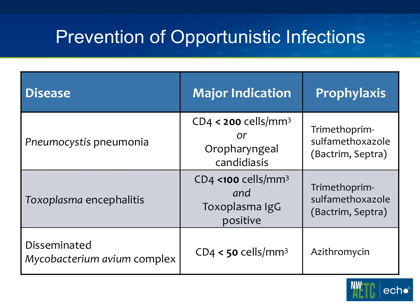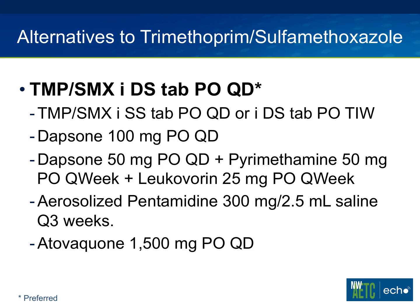Taking three common pathogens: for pneumocystis pneumonia, we provide prophylaxis when T cells are less than 200 or when there is oropharyngeal candida indicating immune compromise. Preferred therapy is trimethoprim-sulfa, a double-strength tablet once a day. For toxoencephalitis, we're preventing disease, not infection — for individuals with T cells less than 100 who are IgG-positive for toxo, Bactrim is the preferred therapy to prevent reactivation. For disseminated mycobacterium infection, which doesn't occur until T cells are less than 50, azithromycin provides effective prevention.